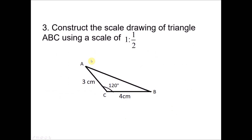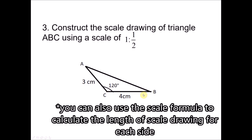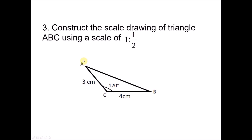Question 3: Construct a scale drawing of triangle ABC using the given scale, without a given grid. The scale is 1 to 1/2, meaning every 1 unit of the scale drawing represents 1/2 of the object — so the scale drawing is 2 times bigger than the object. Side CB becomes 8 cm and side CA becomes 6 cm. Note: there are no changes to the angles, only the lengths of the sides change.